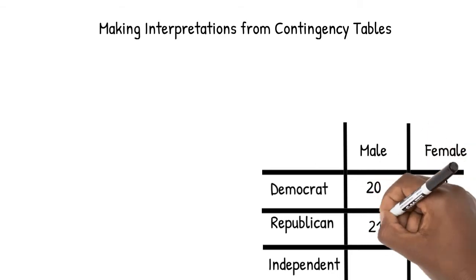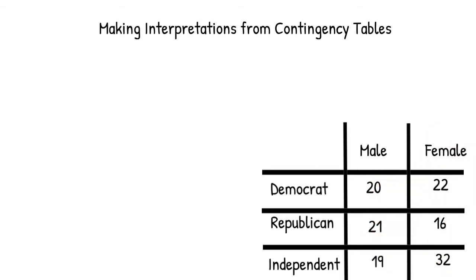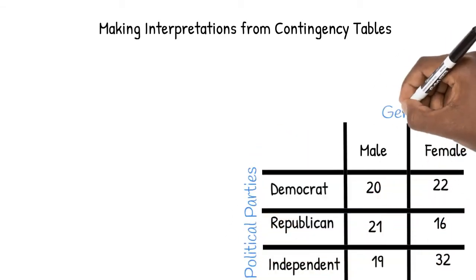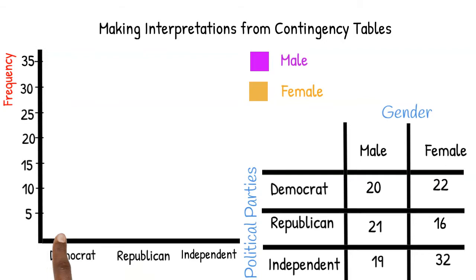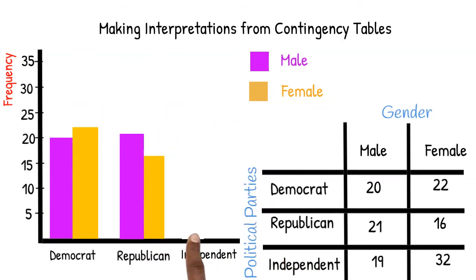The contingency table shows our counts. Now we will be looking at how to interpret information from our table. One way to do this is to draw a side-by-side graph and examine what we see. By looking at the graph, it is easier to make comparisons.